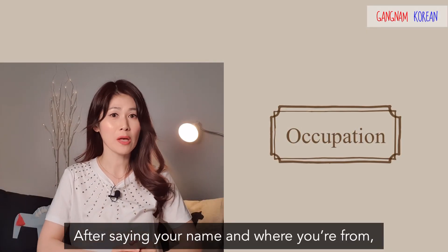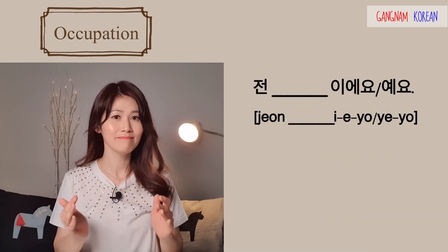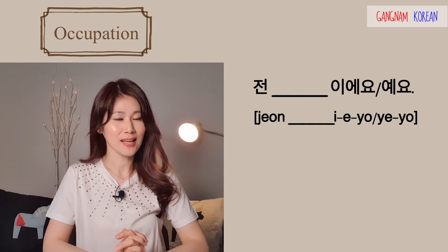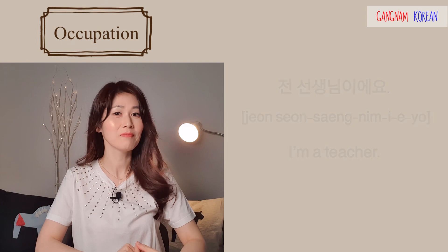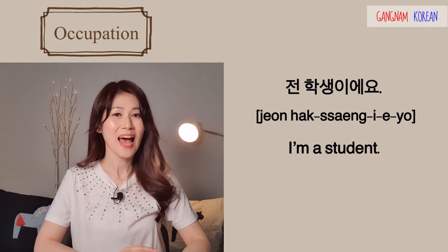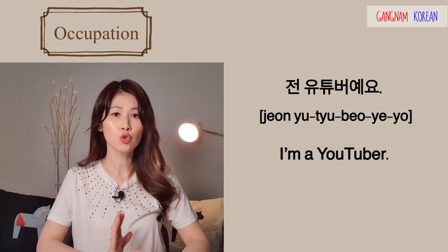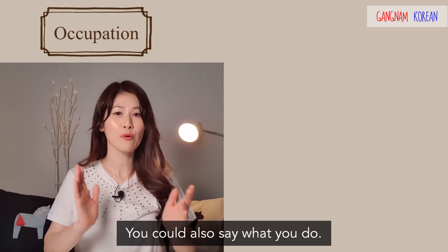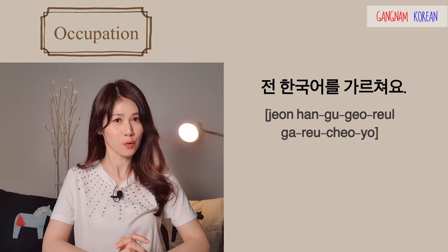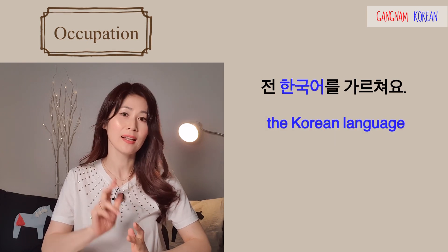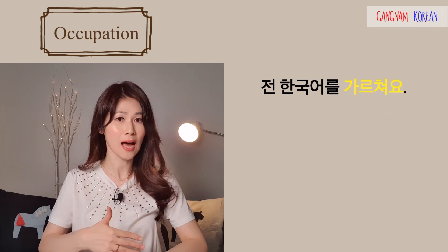After saying your name and where you're from, you may want to mention your occupation: 전 ~~이에요. If you are a teacher: 전 선생님이에요 — I'm a teacher. If you're a student: 전 학생이에요. 전 유튜버에요 — I'm a YouTuber. You could also say what you do: 전 한국어를 가르쳐요 — 한국어 means the Korean language, 를 is an object marker, and 가르쳐요 means 'teach'. I teach Korean.